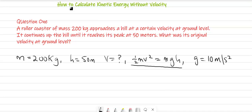This is the formula we are going to use. Now, half M V squared is equal to M times G times H.